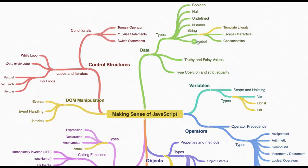These are the different types. Symbol is the new type which is added in ES6, and we already have boolean. In the string, now we can have template literals and concatenation.